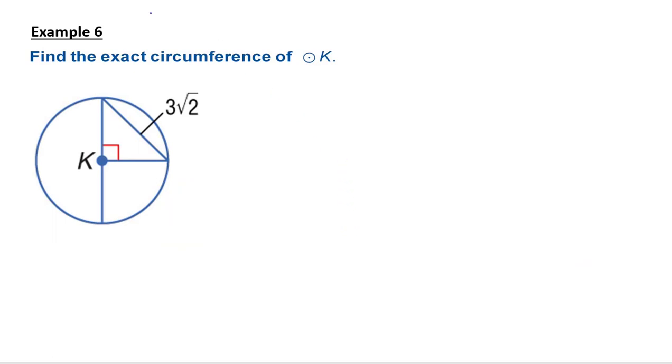Number six. Find the exact circumference of circle K. So I have circle K here. I have kind of a triangle that's happening here. And we know that all the radii are congruent. So that's a 45-45-90 triangle. I'm actually recording a bunch of these videos at one time. And I recorded the 45-45-90 triangle video yesterday, last night.